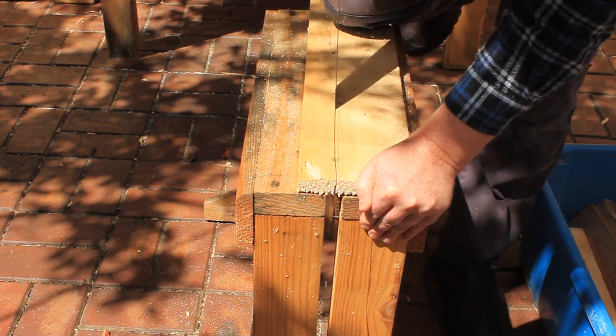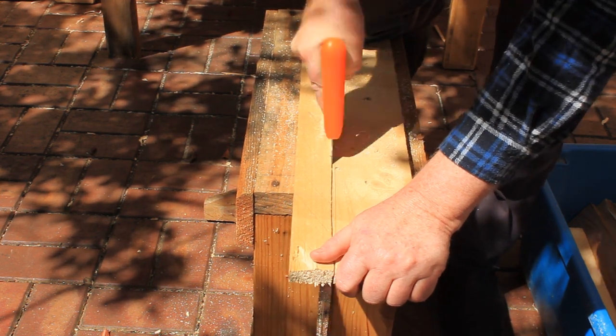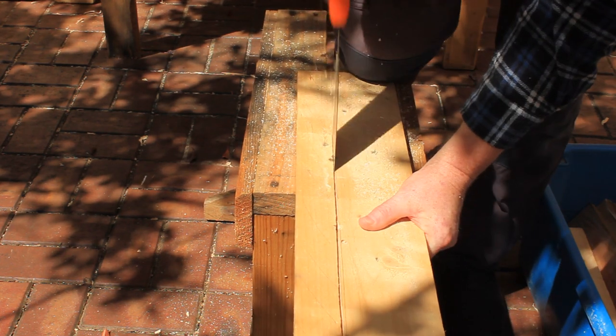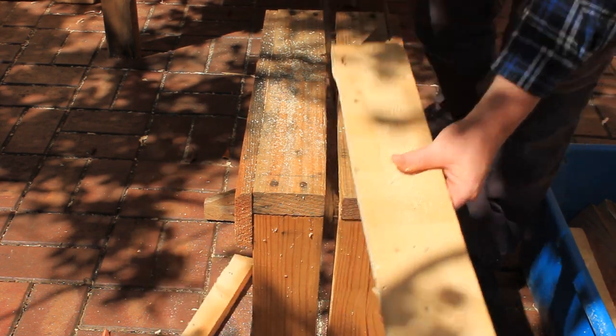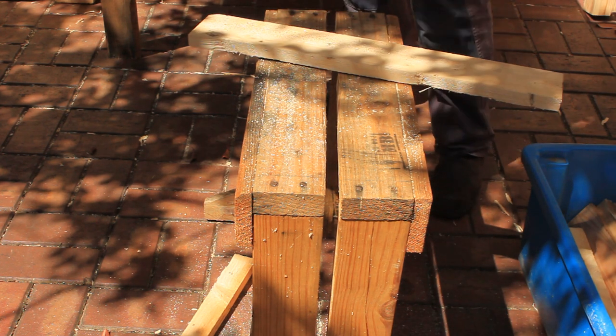I later found that the boards are easier to hold if you do the rip cut first and the cross cut second. Repeat these cuts for the other three wide boards.